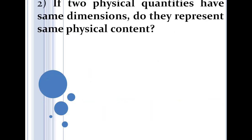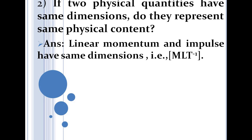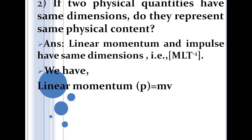The second conceptual question: if two physical quantities have the same dimensions, do they represent the same physical content? Let's look at an example. Linear momentum and impulse have the same dimension, MLT⁻¹. Linear momentum is defined as the mass of a body times its velocity — it is a vector quantity. Its dimension is M × LT⁻¹ = MLT⁻¹.